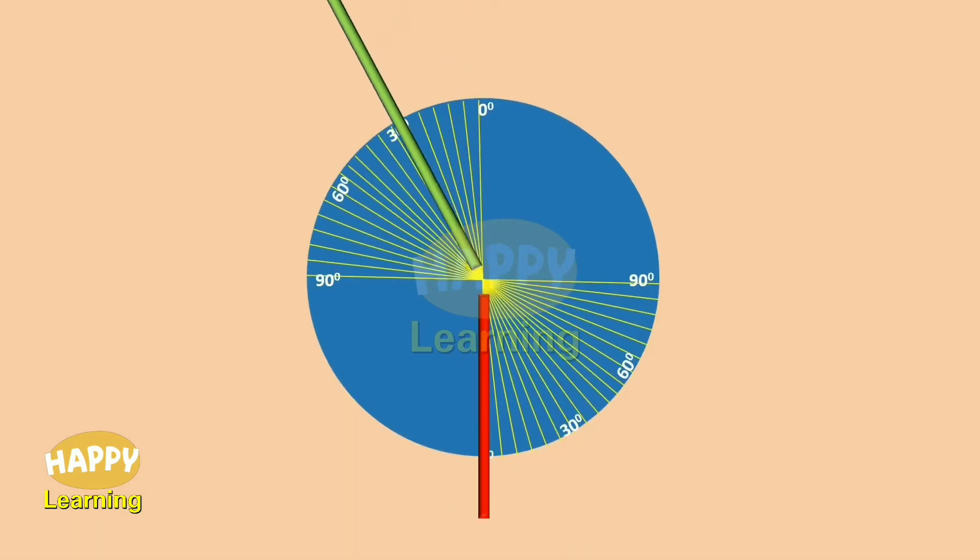Arrange two straws at the center of the disc in such a way that they can be rotated freely about the center of the disc.